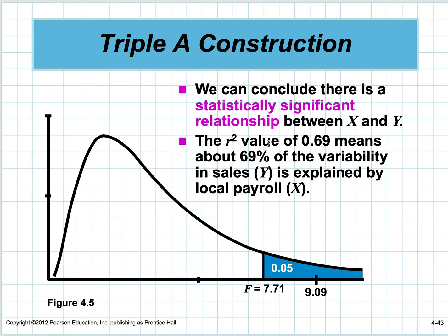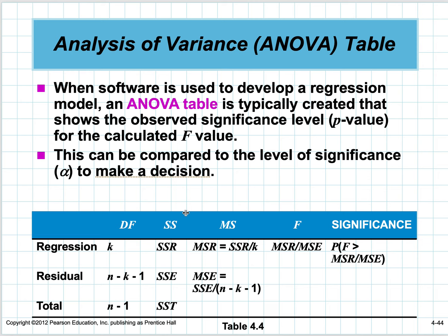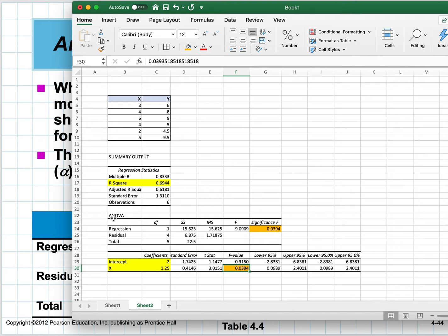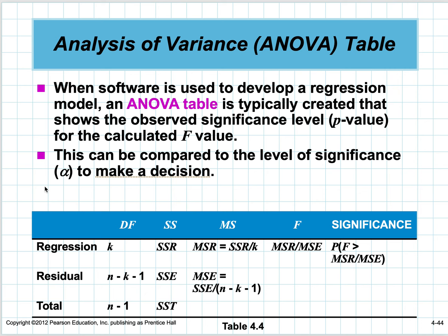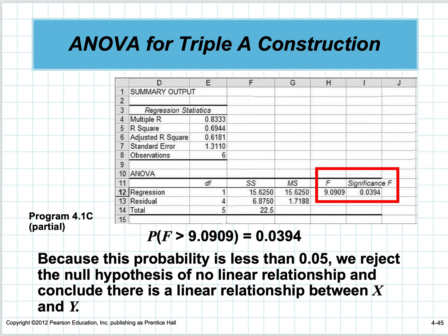The R-squared value of 0.69 means about 69% of the variability in sales is explained by local payroll. This is the ANOVA analysis-of-variance table summary—that's where the F-statistic and its significance are. The significance level or p-value for this F-statistic is 0.0394 or 3.94%—it's less than 5%, therefore we can reject the null hypothesis, which means there's a relationship.